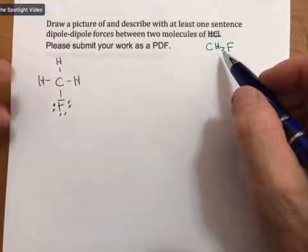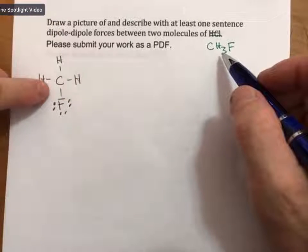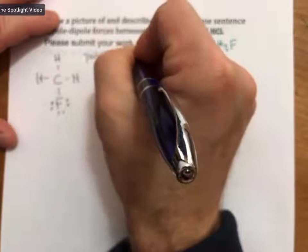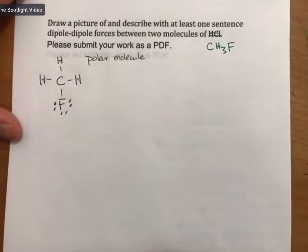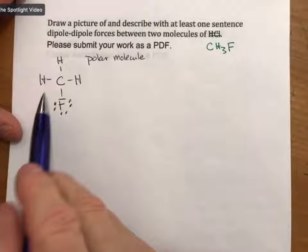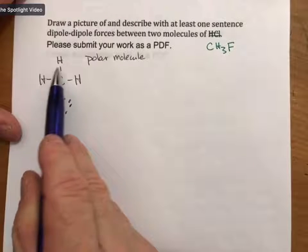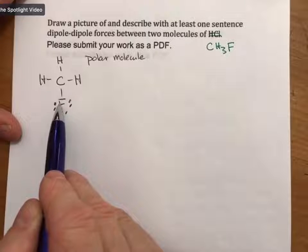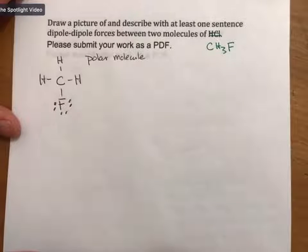You can tell via two methods that this is a polar molecule. Polar molecules are molecules that have net dipoles. First off, you can see that around the central atom there are H's and then there's something else which is an F. Anytime there's two different things around a central atom, chances are there is a dipole and it is a polar molecule.